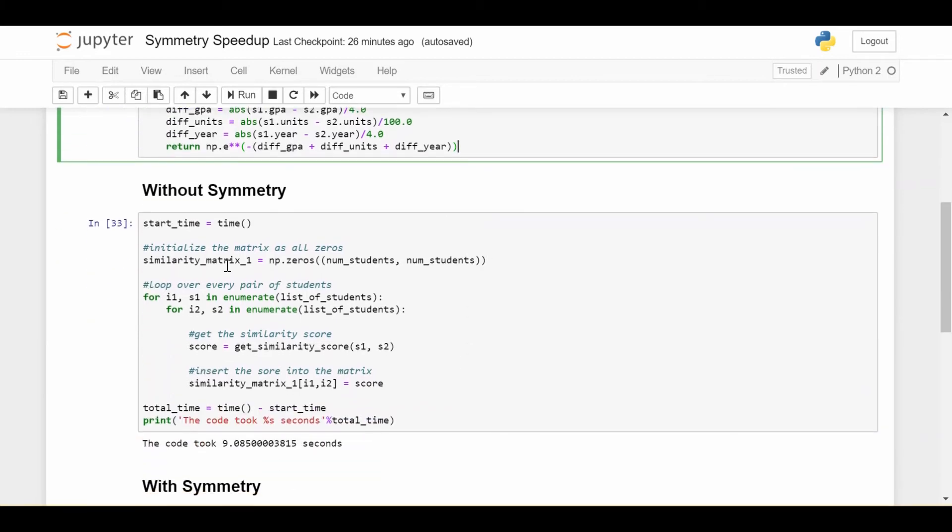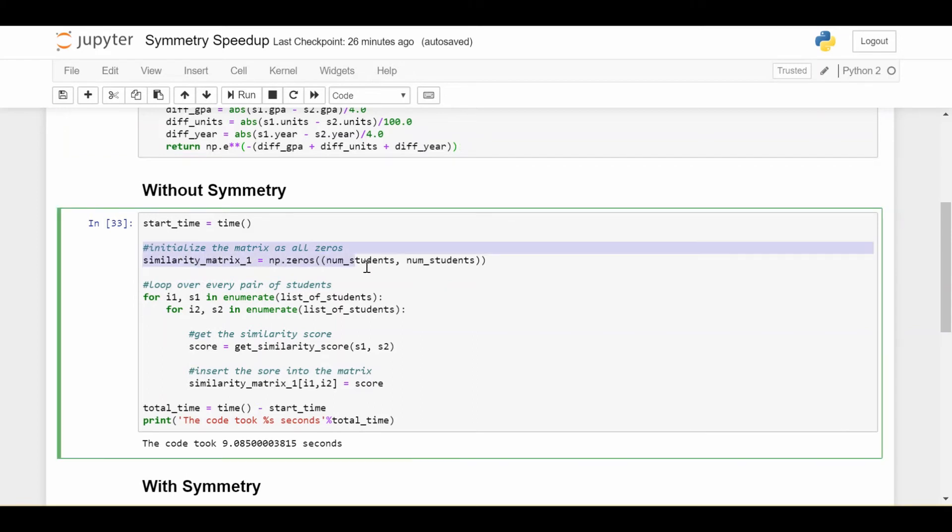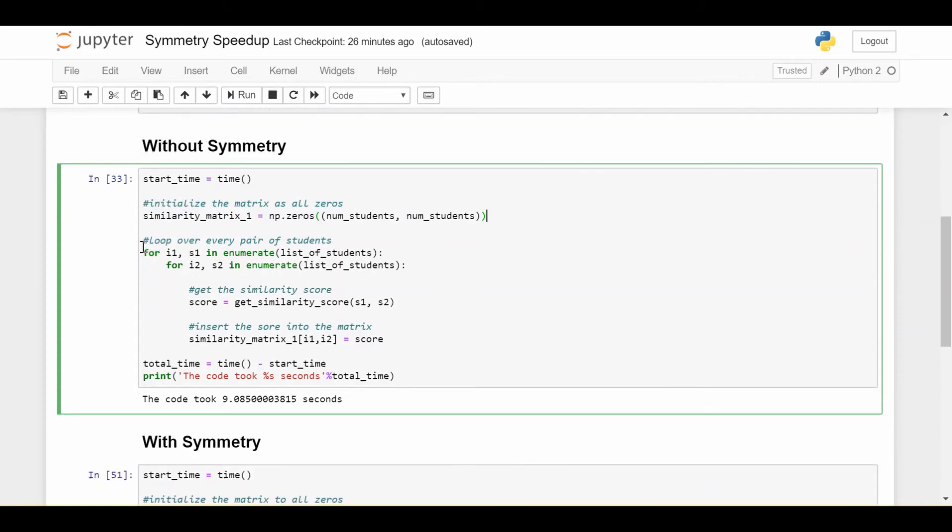So let's look at first without symmetry. How would we generate this similarity matrix? We would first initialize the similarity matrix as all zeros. So this is a 2,000 by 2,000 matrix of all zeros. We loop over every pair of students. So we enumerate the list of students and then enumerate the list of students again in the nested for loop. So given that we have any two students in question, we can get the score by just putting these two students into the similarity function.